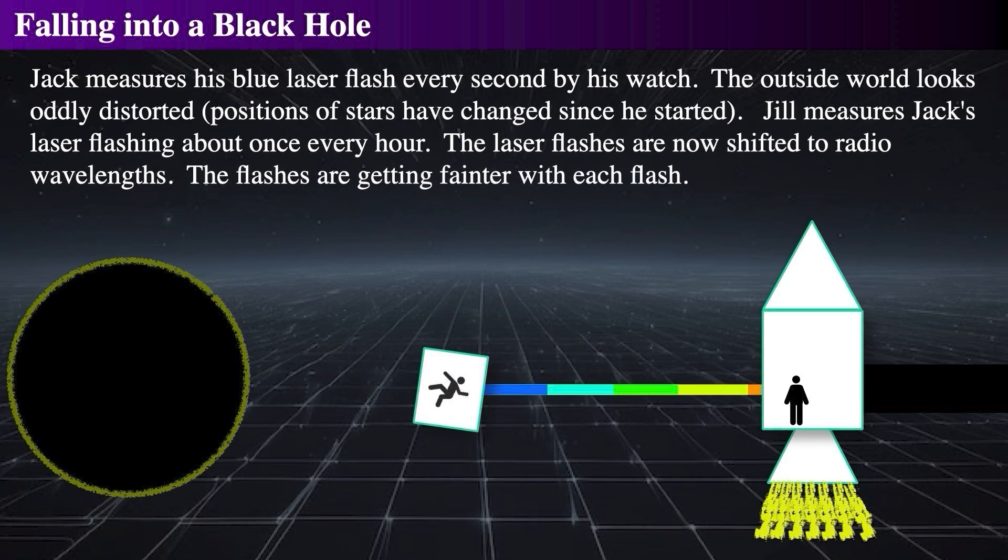Jack notices the outside world becoming increasingly bizarre. The stars around him appear to be wildly distorted, as their proper motions accelerate to astonishing speeds. Looking down, he sees the black hole looming below him, filling his downward field of view. He also starts to see devastatingly bright flashes of light from infalling matter accelerated to great speeds, colliding with other matter surrounding the black hole.